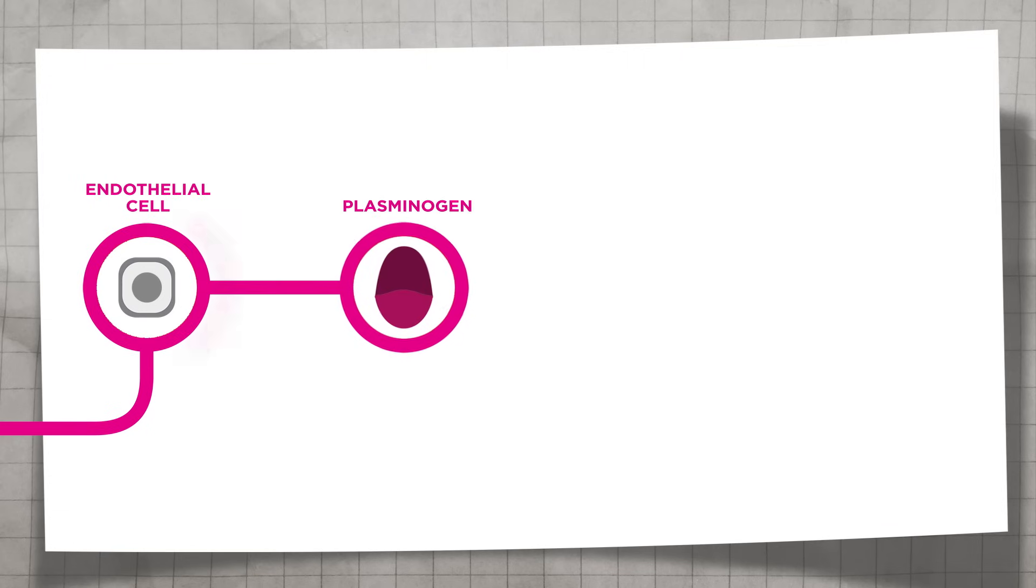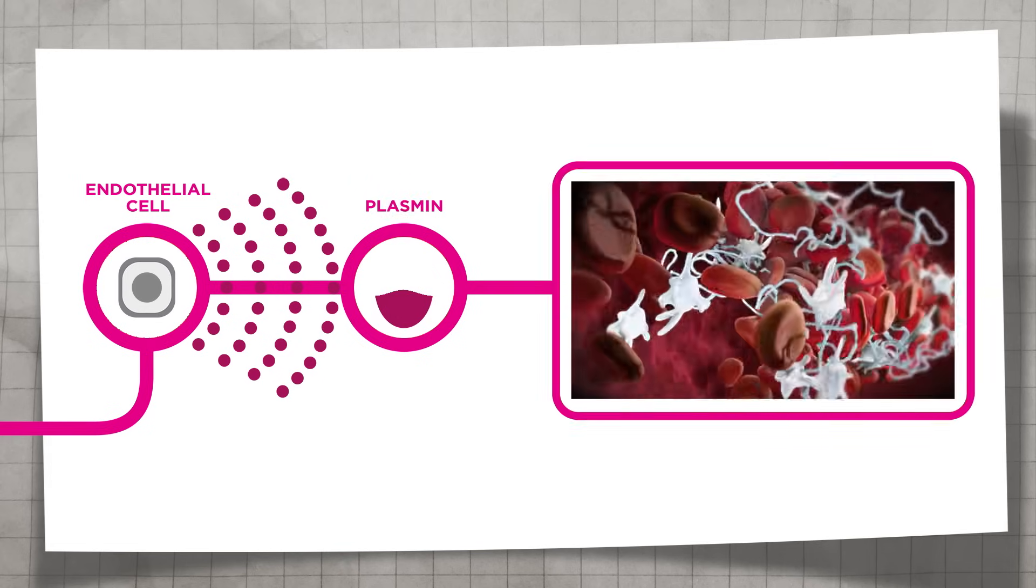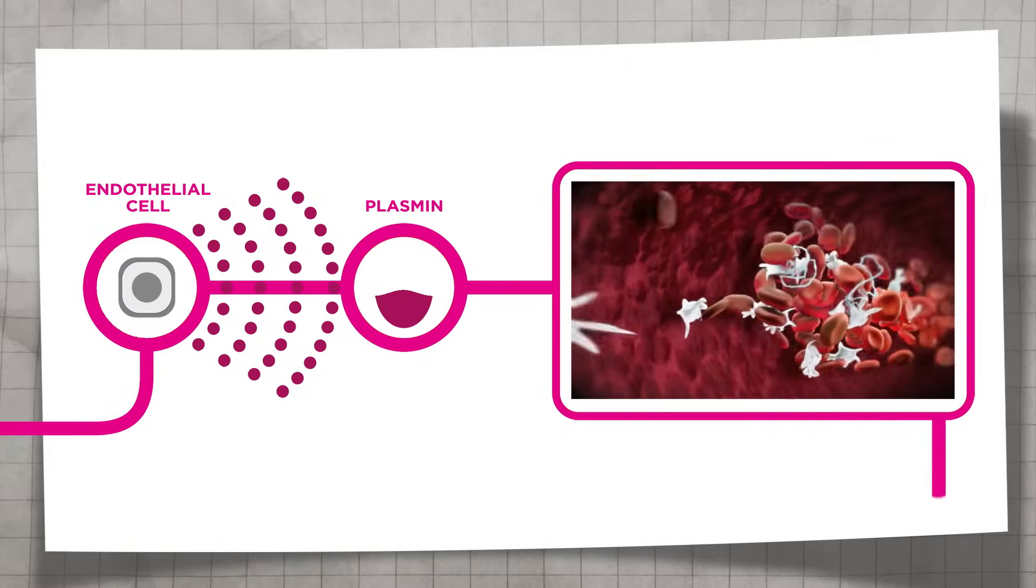Endothelial cells begin to secrete a protein called tissue plasminogen activator, which activates the protease plasmin to degrade fibrin, dismantling the structure of the clot and restoring the integrity of the vessel.